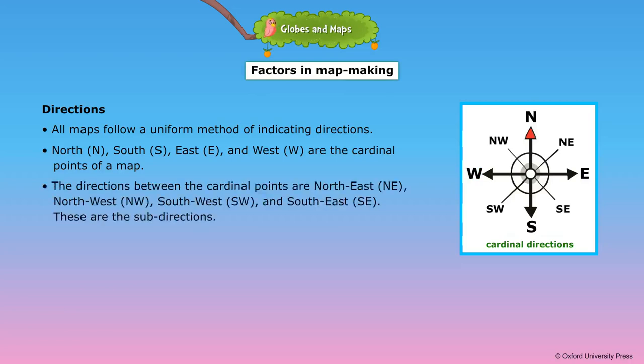The directions between the cardinal points are northeast, northwest, southwest and southeast. These are the subdirections.